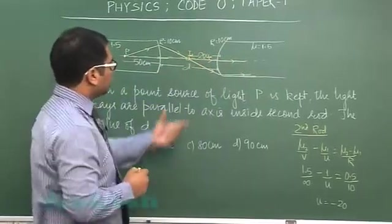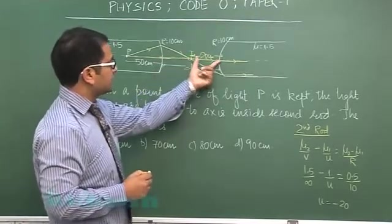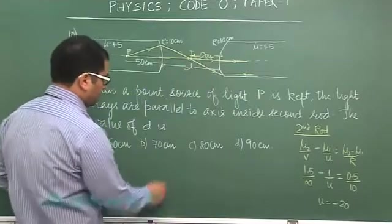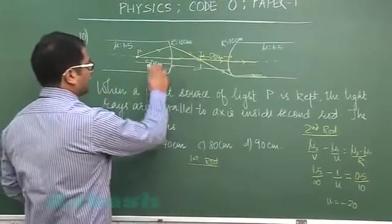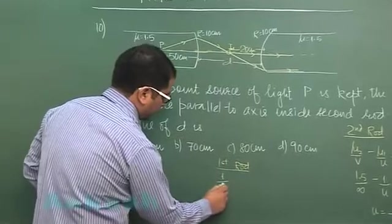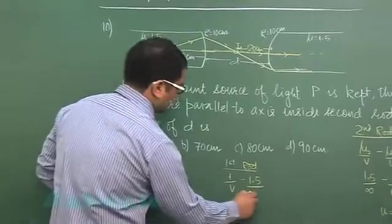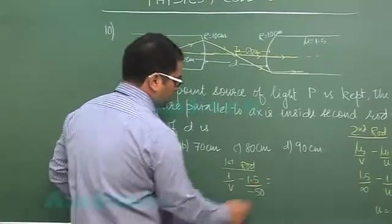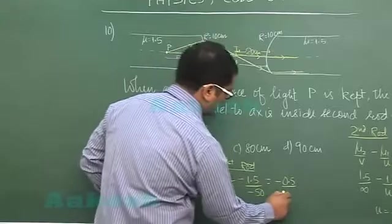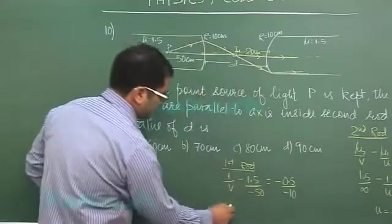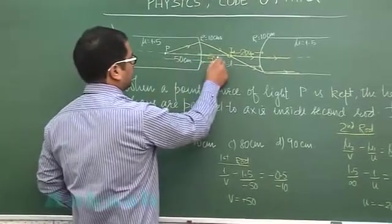Now once I know the value of this distance, if I will be able to calculate this distance then summation of these two distances would give me the value of d. So let us go for the first rod. Again this is 2, this is 1, mu2 by v minus mu1 which is 1.5 by u that is negative of 50 is mu2 minus of mu1 by r. The incident rays in this direction so r has to be minus of 10. When you calculate this you would get v as plus of 50, so indicating this distance is 50 cm.